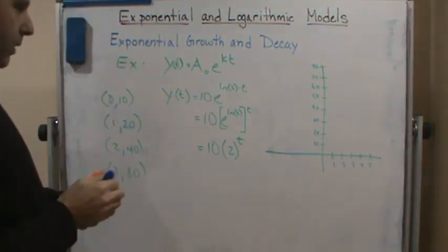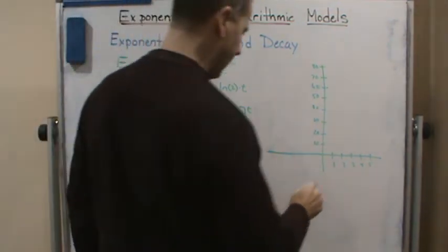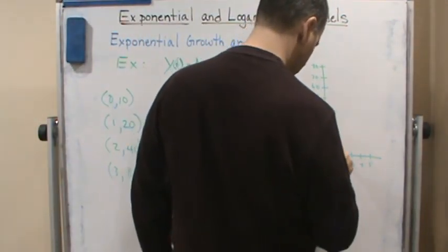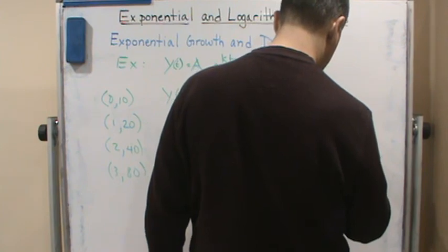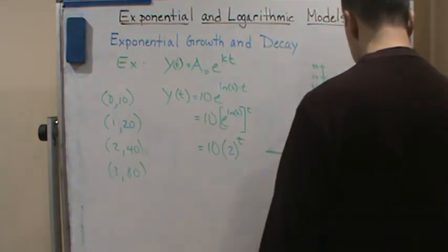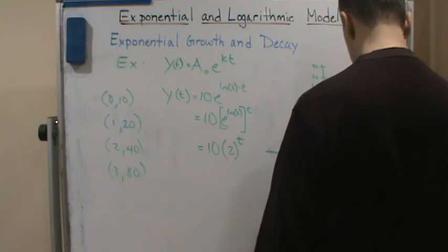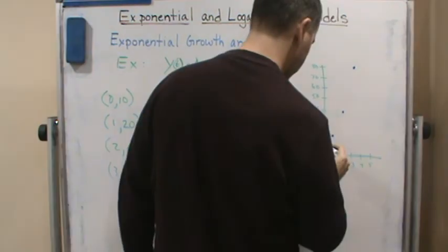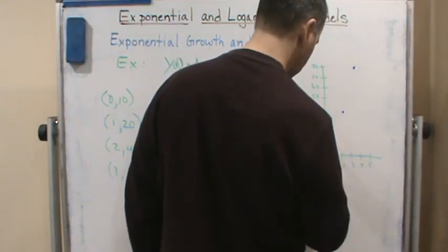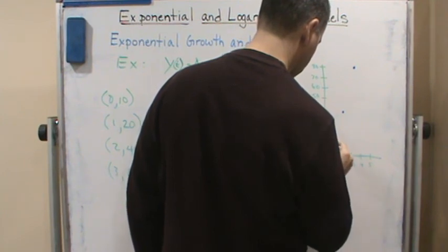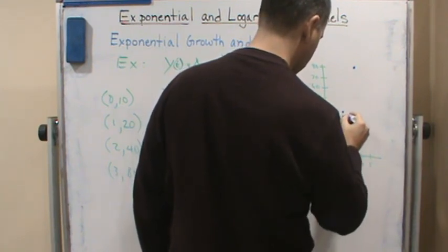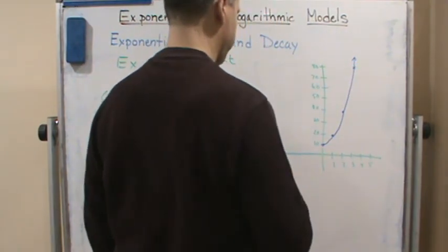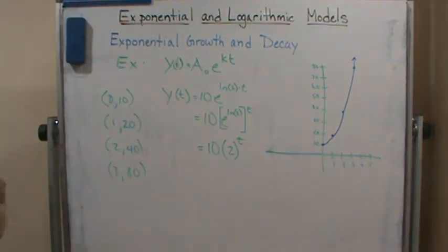Okay, so we have 10, 20, and so the graph is going to look something like this.